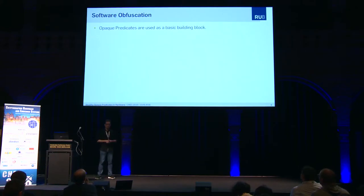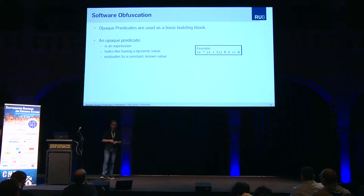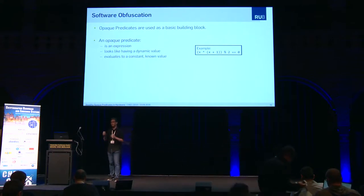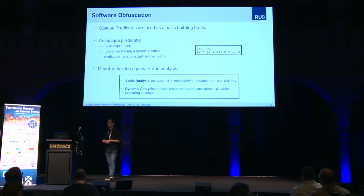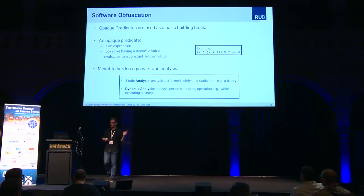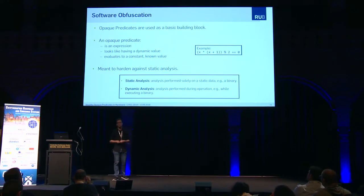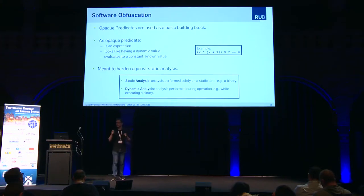Opaque predicates are a basic building block in software to realize control flow obfuscation. An opaque predicate is an expression which looks like it has a dynamic value, but it actually evaluates to a constant value which is known to the designer. For example, take this expression: x times x plus 1 modulo 2 — this is actually zero for every x. A static analysis tool will not be able to identify this as an always-true expression. Opaque predicates help against static analysis, which analyzes solely static data — your binary or your gate-level netlist — but is not allowed to simulate or debug. That is what dynamic analysis can do. With opaque predicates, we aim to harden against static analysis.